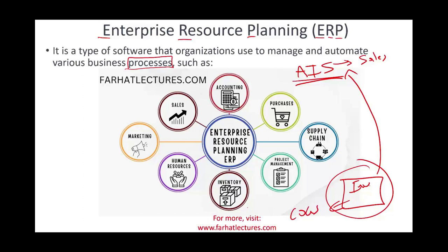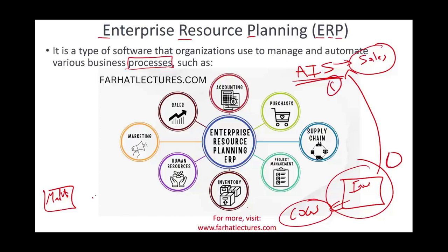Let's assume we want to run a profitability report — to compute gross profit. We have to download information from the AIS and download cost of goods sold from the inventory software, then find the numbers. We are dealing with two different software packages. You could end up with one, two, three separate systems — for accounting, inventory, and marketing.